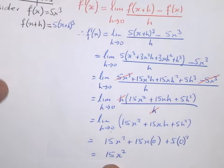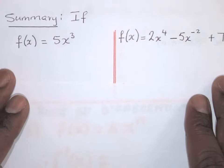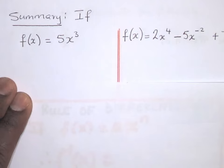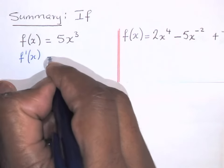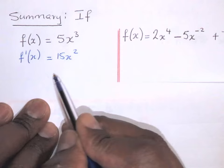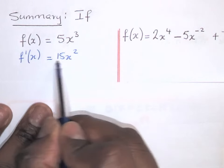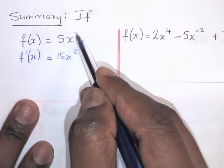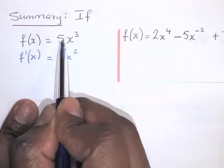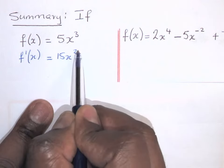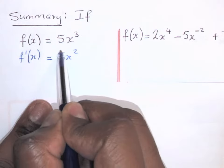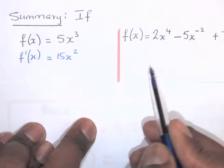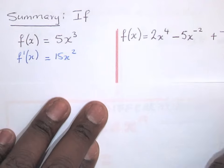Now we've got to find the easiest way of getting this. Let's summarize and look at the problem we just had. When it was 5x³, the final answer for f'(x) was 15x². Let's try and generalize. It seems as if the 3 is multiplying the 5 to give us 15 — 3 times 5 is 15. And where does the square come from? It's from subtracting 1 from the 3. So you multiply the coefficient by the exponent to get 15, write x, then subtract 1 from the exponent.